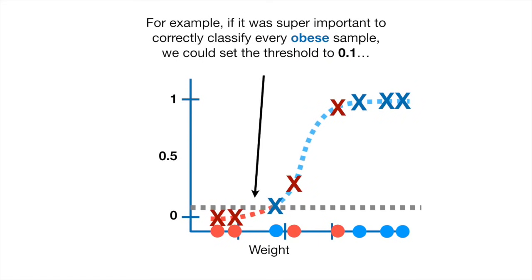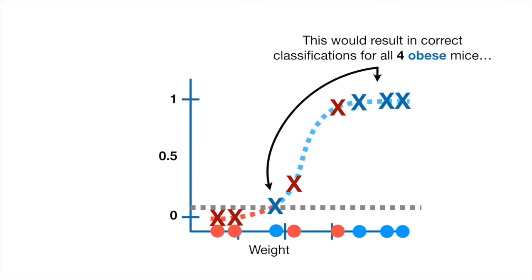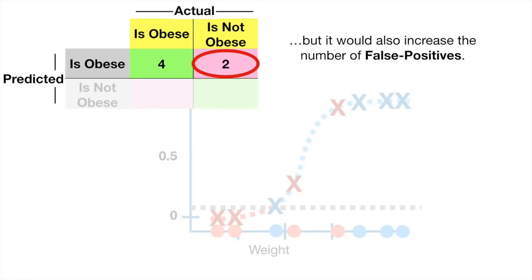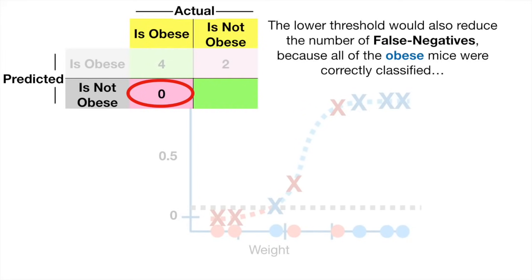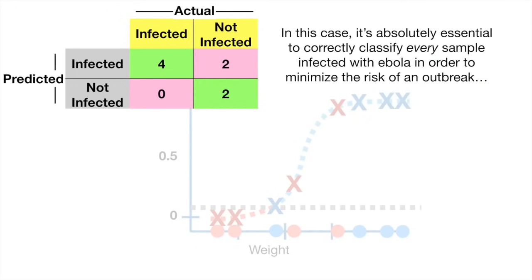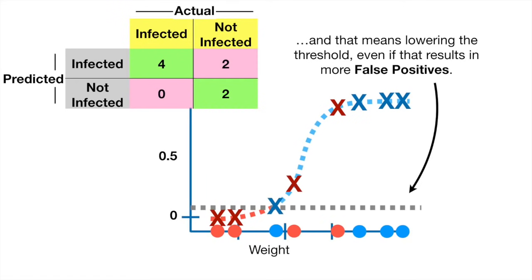For example, if it was super important to correctly classify every obese sample, we could set the threshold to 0.1. This would result in correct classifications for all four obese mice, but it would also increase the number of false positives and reduce false negatives. Consider classifying samples as infected with Ebola versus not — in that case, it's absolutely essential to correctly classify every infected sample to minimize the risk of an outbreak, even if that results in more false positives.